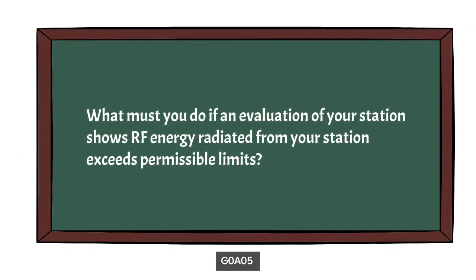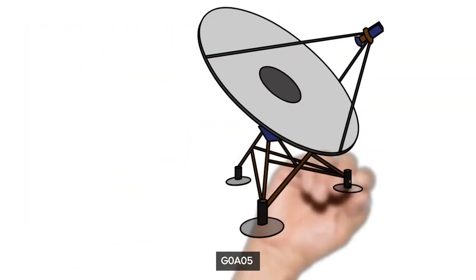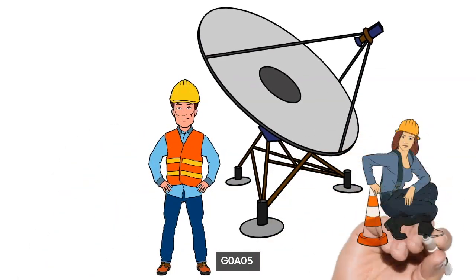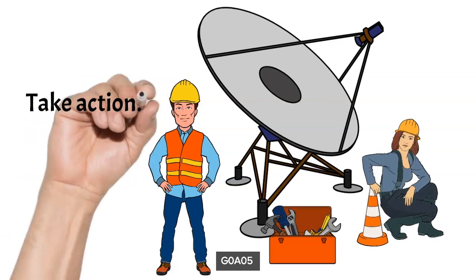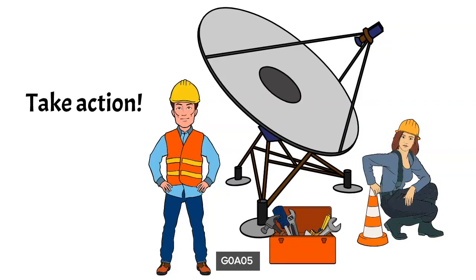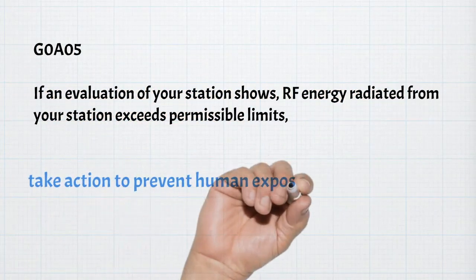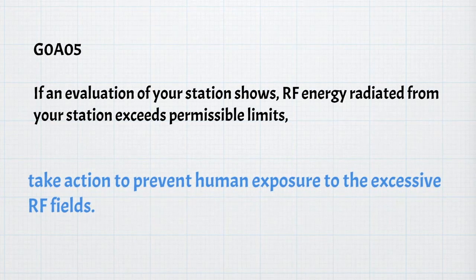For safety, we need to ask ourselves: what must we do if an evaluation of our station shows RF energy radiated from our station exceeds permissible limits? This should be intuitively obvious — if we find in our evaluation that our station is non-compliant with the permissible limits, we need to take action to correct it. For the exam, we need to know that if an evaluation shows RF energy exceeds permissible limits, take action to prevent human exposure to the excessive radiofrequency fields.